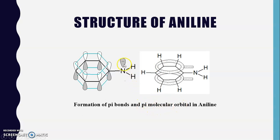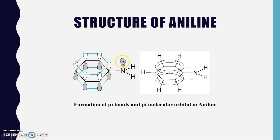The nitrogen atom has a lone pair of electrons. This lone pair is not involved in the formation of the aromatic system and is parallel to the unhybridized p orbital — that is, parallel to the pi bond — while it is perpendicular to the sigma bond.